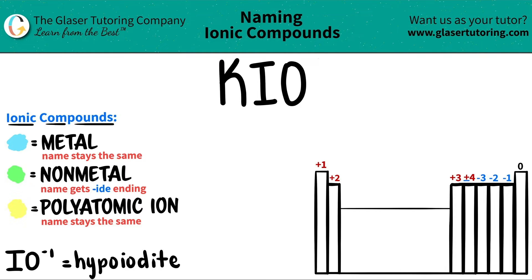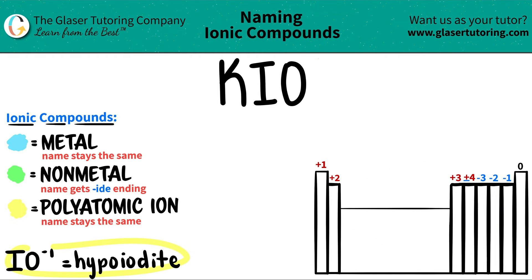However, polyatomic ions are never ever on the periodic table — you have to memorize them. I wrote out the polyatomic ion we're going to be using here. Just use flashcards or write them down and memorize them, because they will come back all throughout your chemistry class.